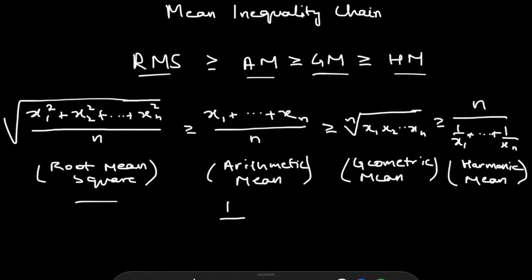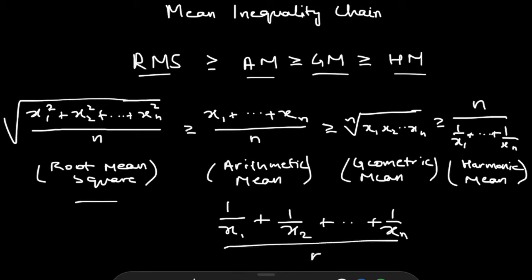So if you had n reciprocals — 1/x₁ + 1/x₂ + … + 1/xₙ — and you took their average, and then took the reciprocal of that value, you get the harmonic mean for that set of n numbers. This is the mean inequality chain. We'll be looking at the proof of this inequality, and then go into some nice contest problems that involve this mean inequality chain.